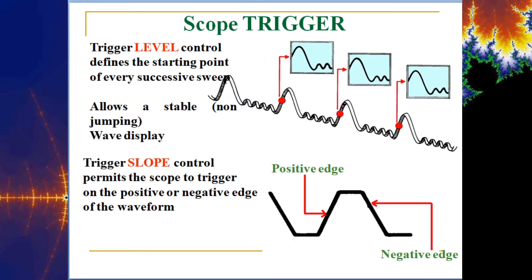The scope trigger is the point at which, for a repeatable signal, it determines where to start. It needs to pick a start point and endpoint to determine when one cycle has been completed. You choose either the rising edge or the falling edge as the trigger point. This allows a stable, non-jumping wave display. If you move it too far and pick up noise, you get a messy signal running across the screen — adjust the scope trigger to fix that.